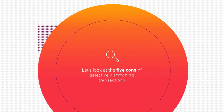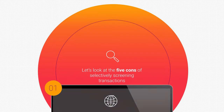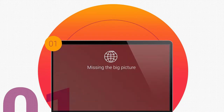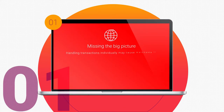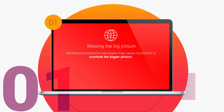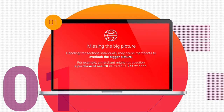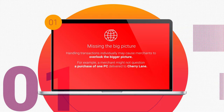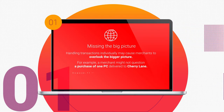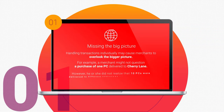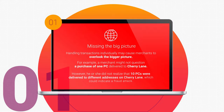Let's look at the cons of selectively screening transactions. Missing the big picture: handling transactions individually may cause merchants to overlook the bigger picture. For example, a merchant might not question a purchase of one PC delivered to Cherry Lane. However, he or she did not realize that 10 PCs were delivered to different addresses on Cherry Lane, which could indicate a fraud attack.